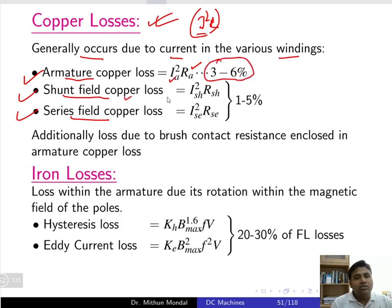Shunt field copper loss is given by Ish² × Rsh, where Rsh is the resistance of the shunt field winding and Ish is the current in the shunt field winding. Series copper loss is given as Ise² × Rse, where Rse is the resistance of the series field winding and Ise is the current in the series field winding.